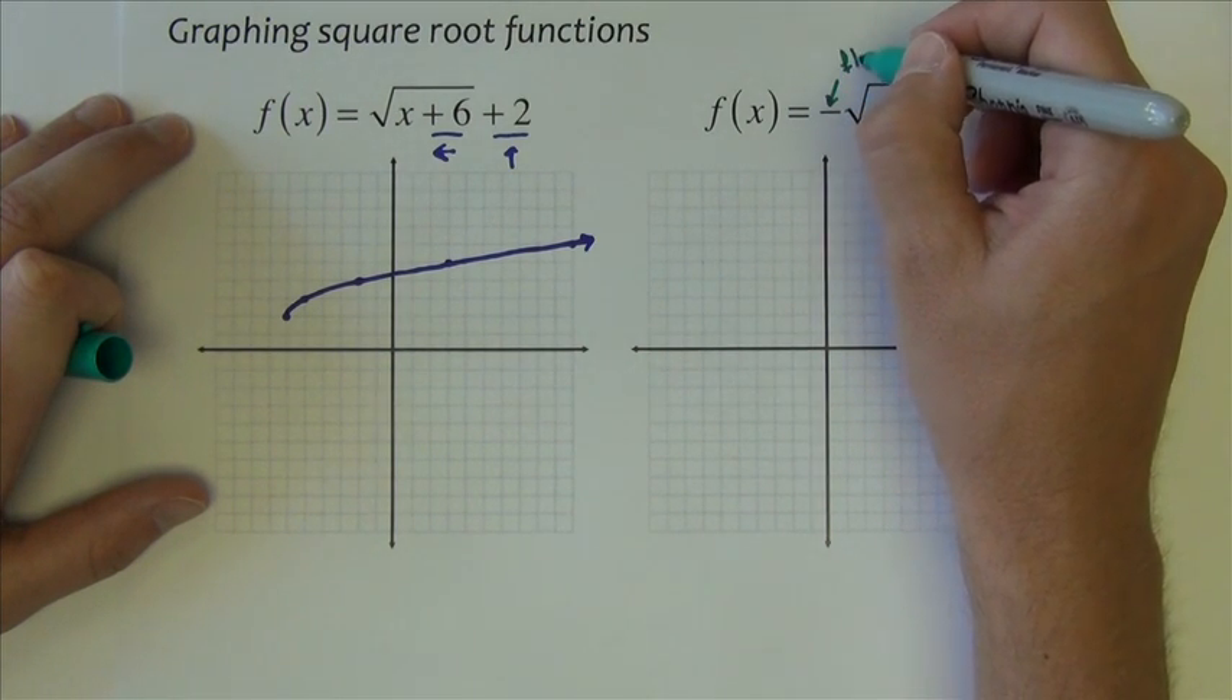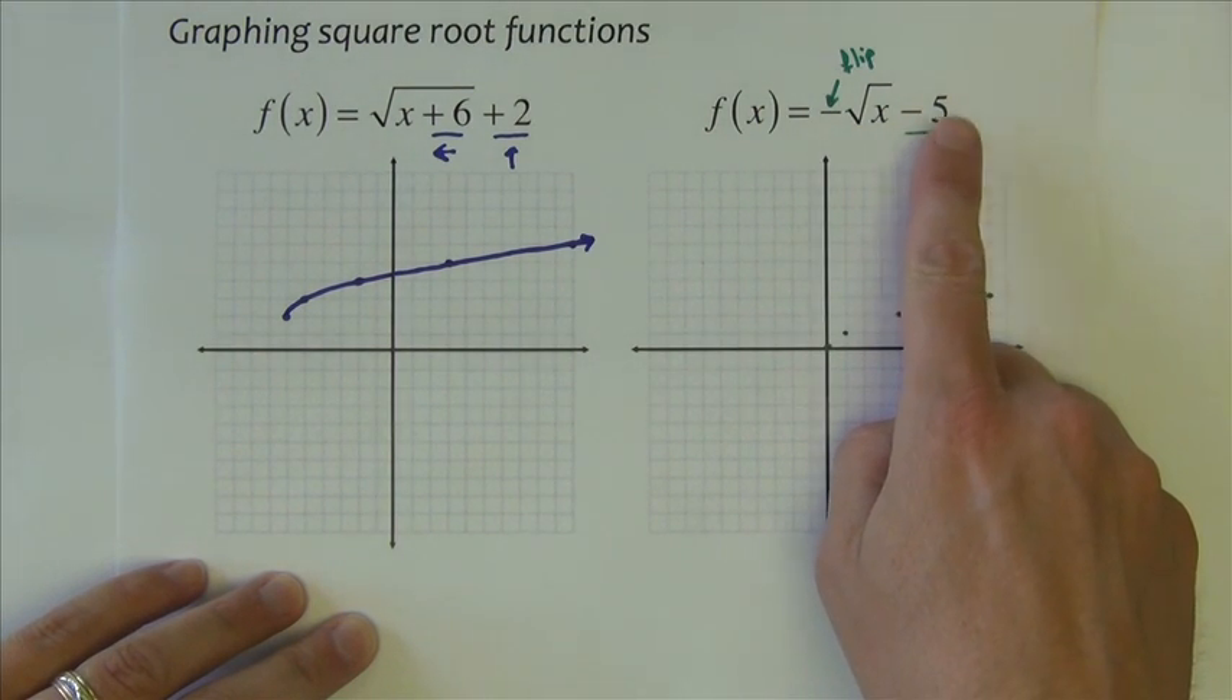Now, the next one has two things to deal with. It's got this transformation minus 5, which takes everything down 5. And it's got this negative in front, which flips the graph over. So, since there's two things going on there, let's just go ahead and plot the original points. We've got to do two things to it. And order of operations applies. We have to flip it over first, because we multiply first. And then we have to take all the points and go down 5 units.